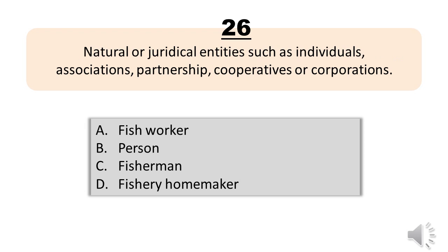Number 26. Natural or judicial entities such as individuals, associations, partnership, cooperatives or corporations. A. Fish worker. B. Person. C. Fisherman. D. Fishery homemaker. The correct answer is Letter B. Person.